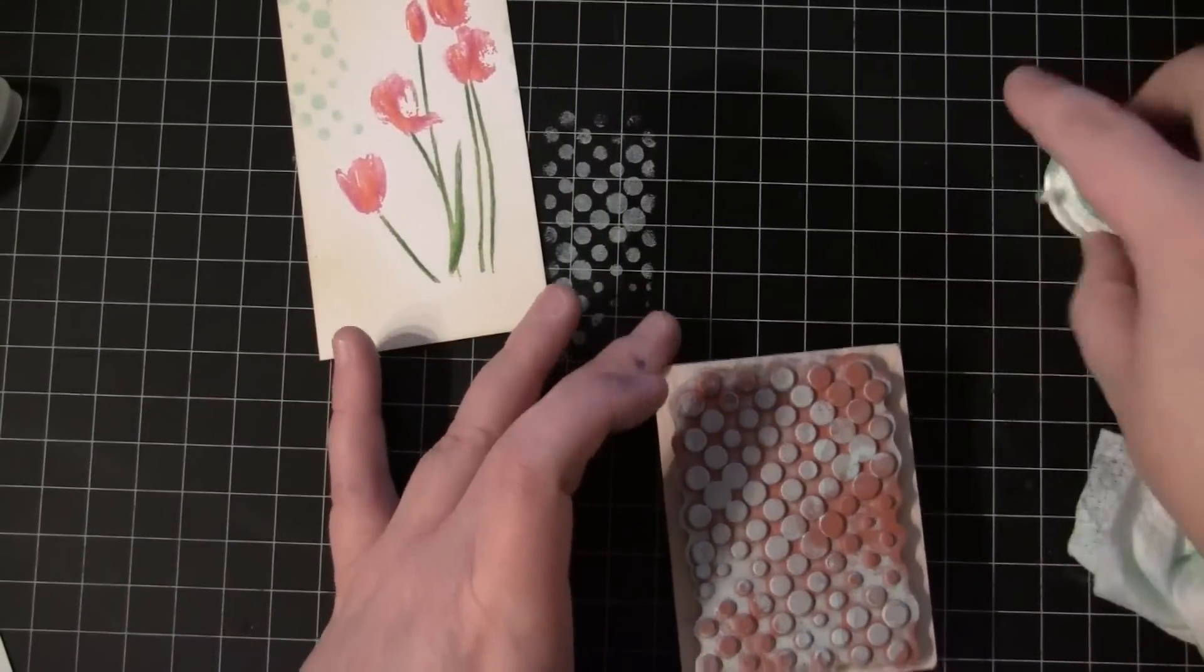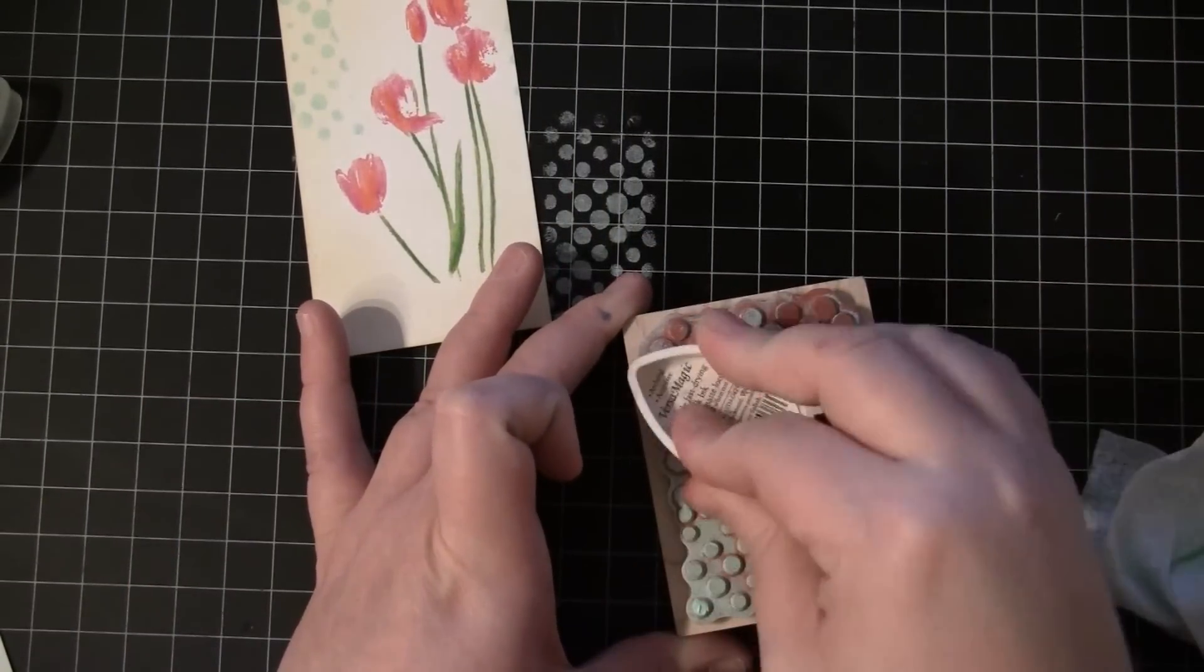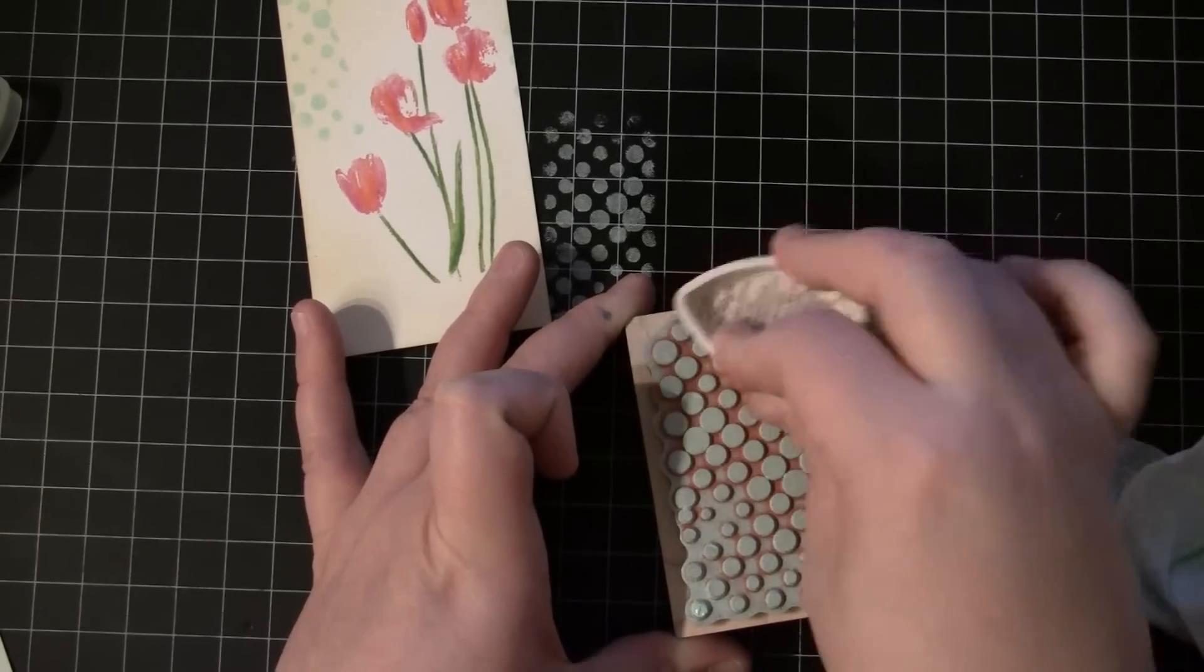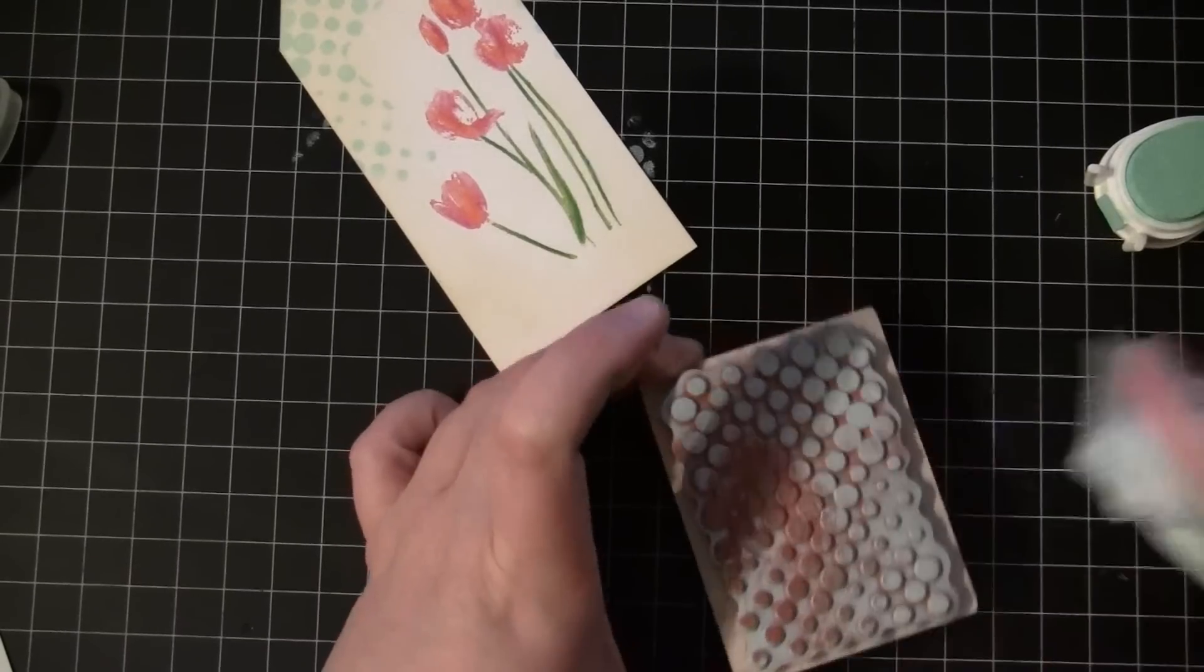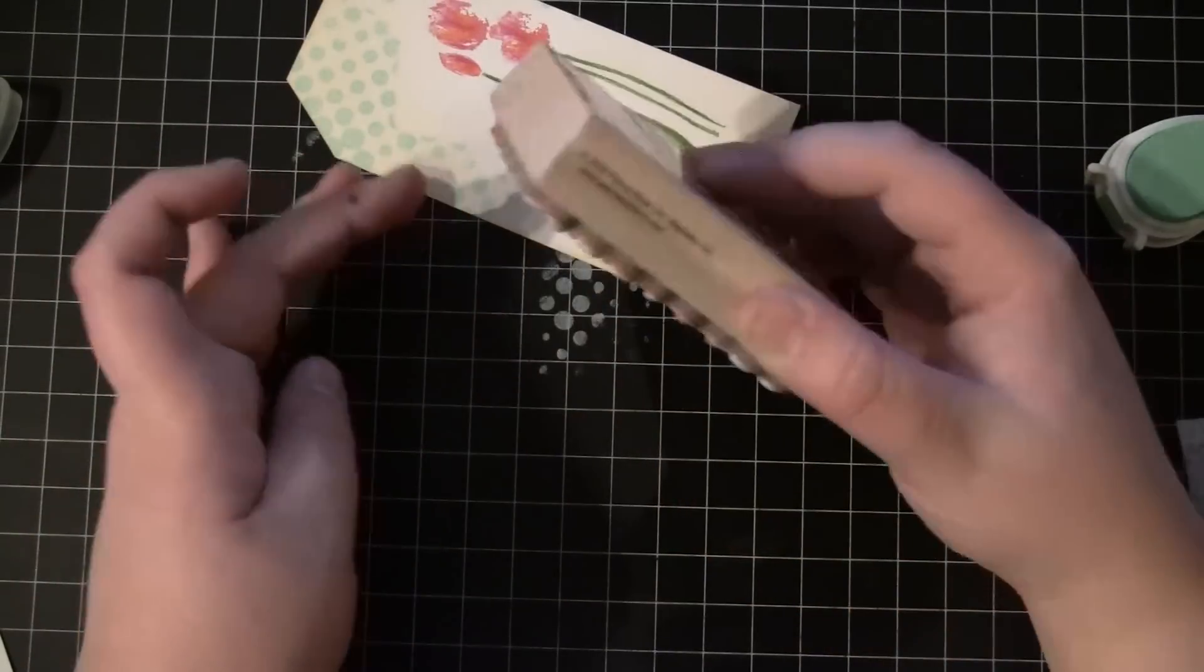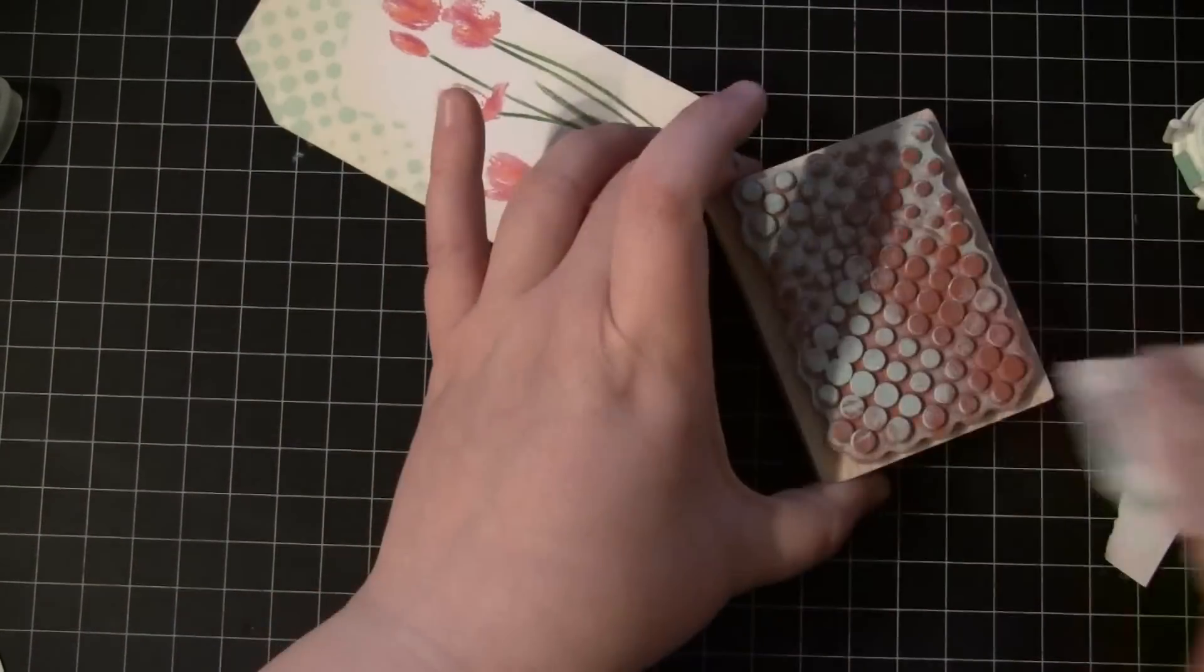You can see how that ink creates such a nice soft look on the background. And here each time I'm re-inking and then dabbing some off with the baby wipe.